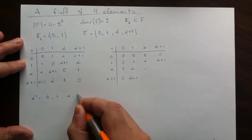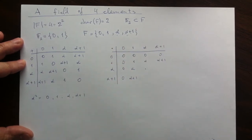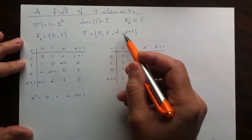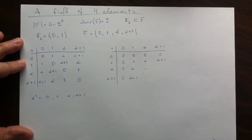0, 1, alpha, and alpha plus 1. So all we know at this moment is that alpha squared is one of those elements. So let's just examine each of them one by one.